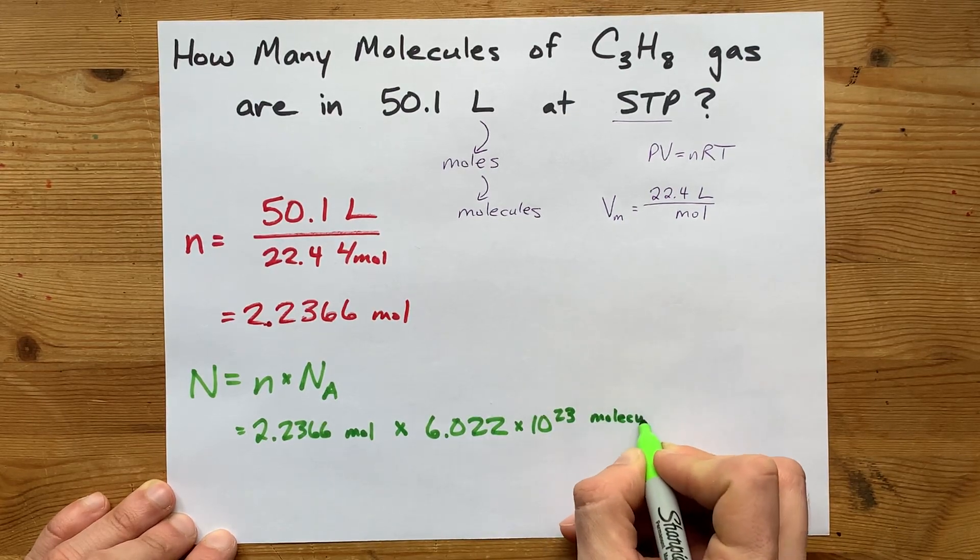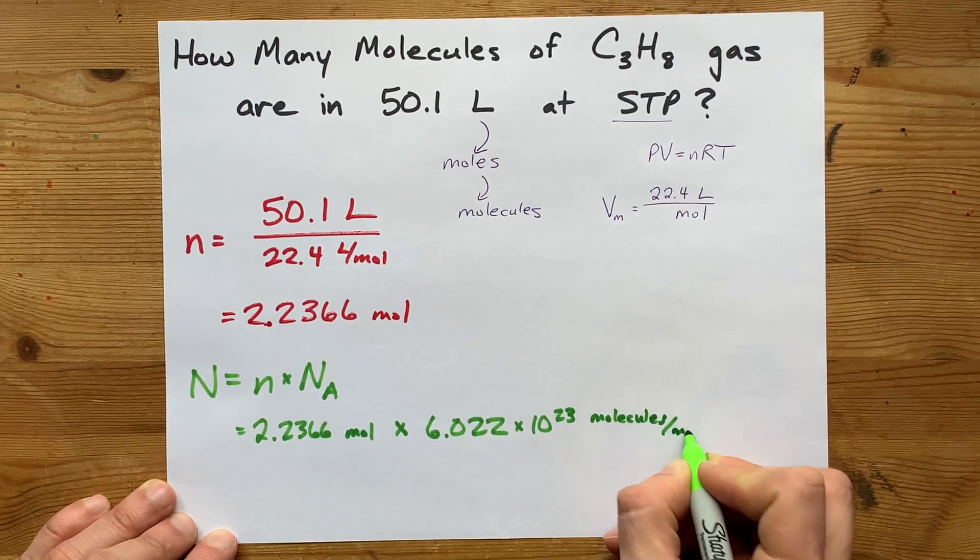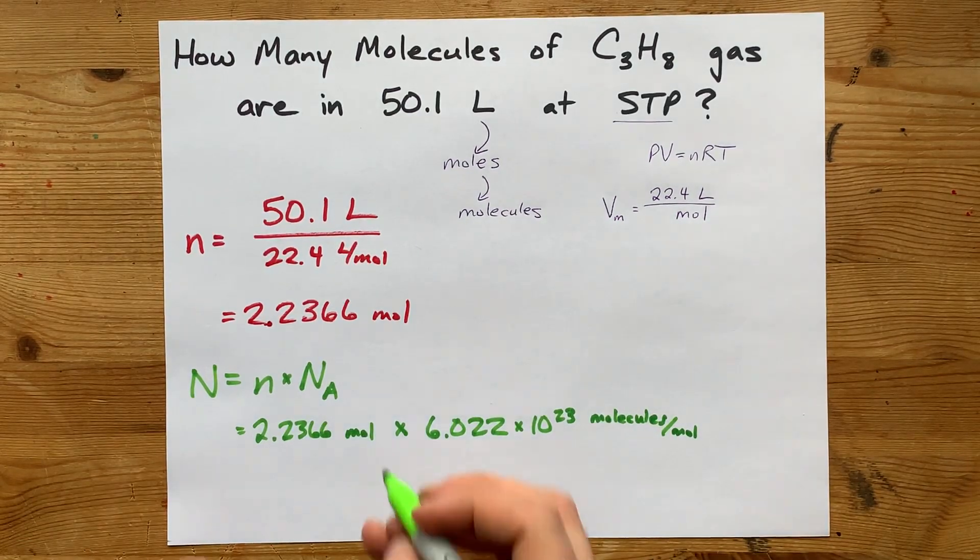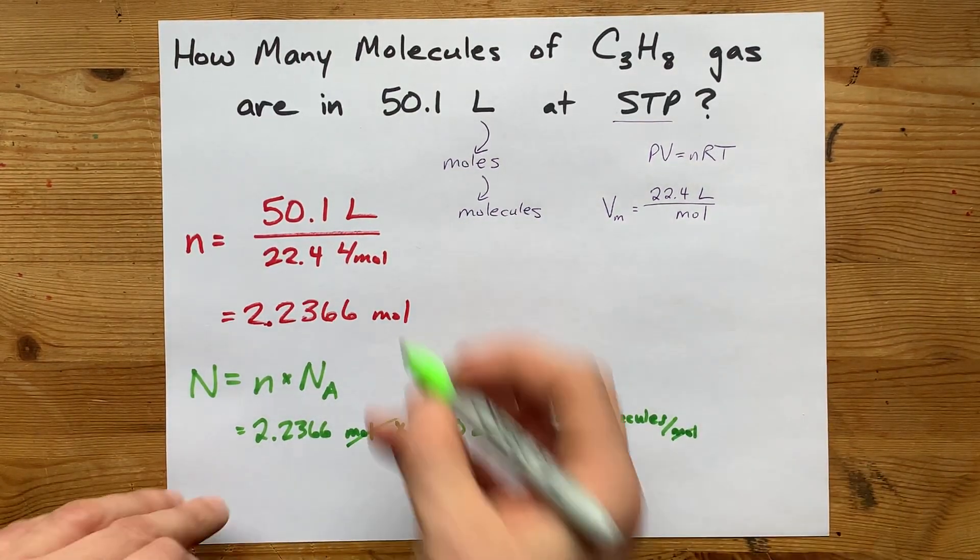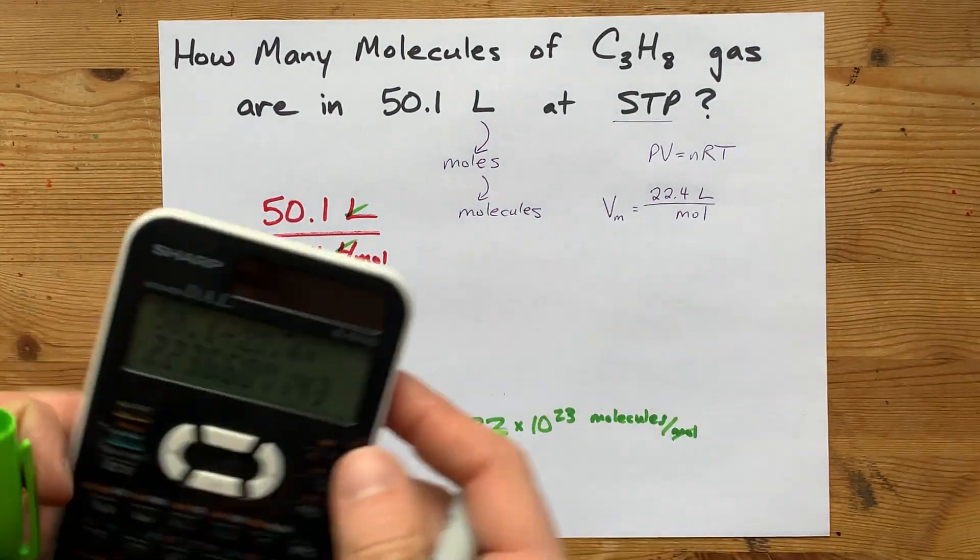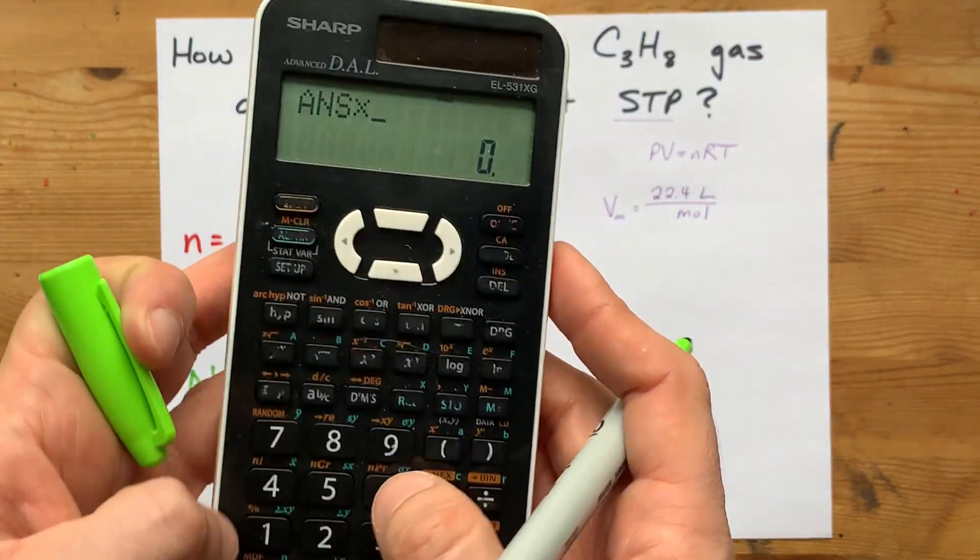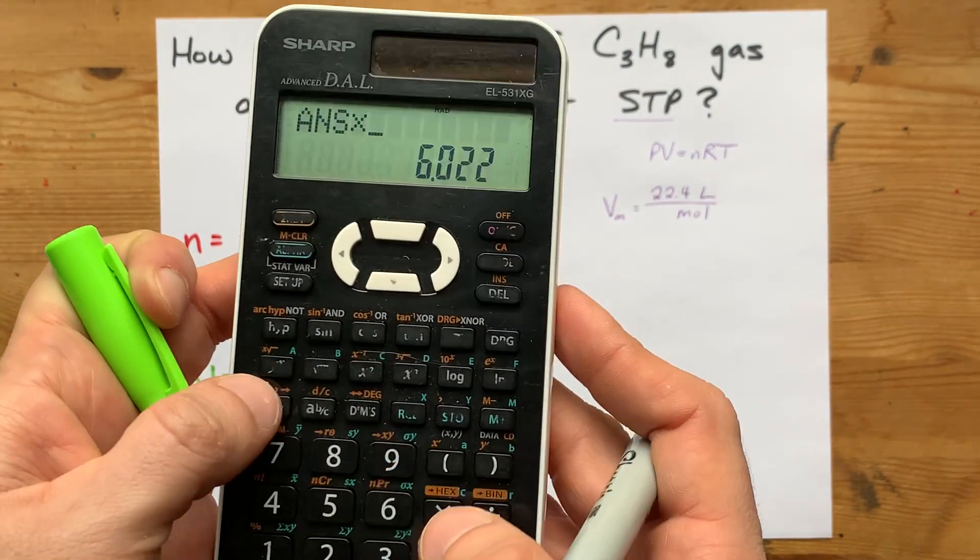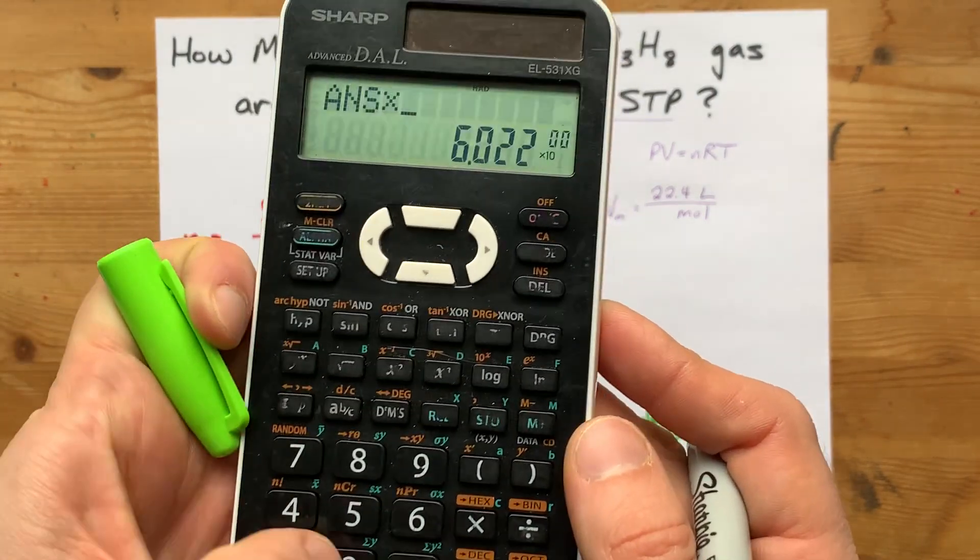Now, the units on that are whatever you're counting per mole. I'm going to write molecules per mole here. Notice the units of moles cancel out, kind of like liters did here to leave you with moles. And here I'm left with number of molecules. That's times 6.022 times 10 to the power of 23.